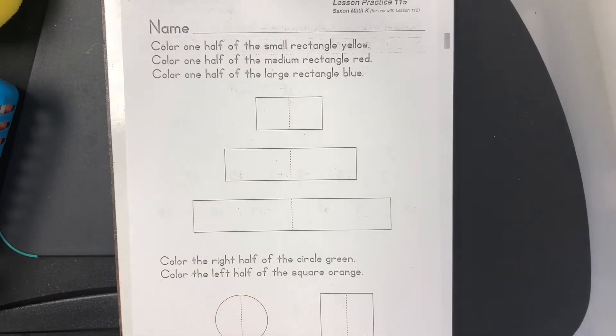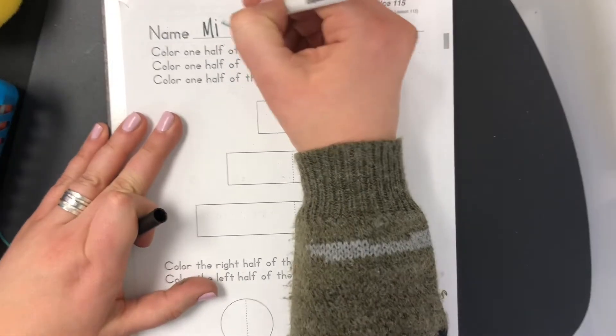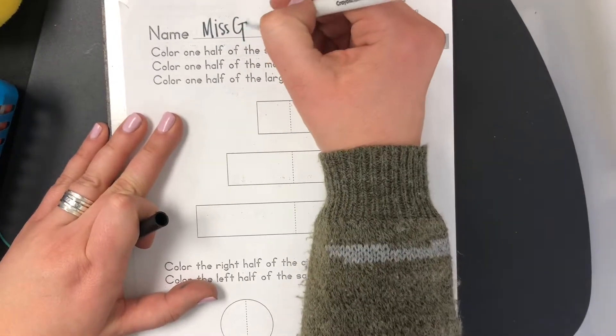Alright, welcome to math. Today we're on lesson 115. Go ahead and write your name at the top. We're talking about small, medium, and large rectangles.